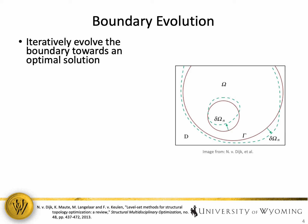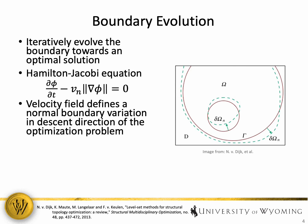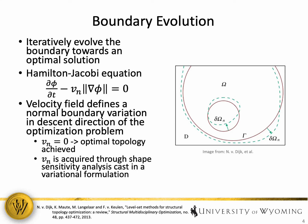The next important question to ask is how does the level set method iteratively evolve the boundary towards an optimal solution? Now traditionally, this is done through the use of the Hamilton-Jacobi equation. This equation evolves the level set function throughout a pseudo time t. The velocity field within this equation defines a normal boundary variation in the descent direction of the optimization problem. In the figure on the right, the green dashed line would represent a normal boundary variation. Now when the velocity field goes to zero, this indicates that an optimal topology has been achieved because the level set function, or the boundary, is no longer evolving in time.